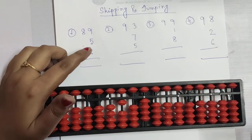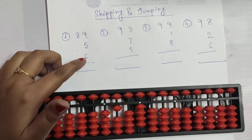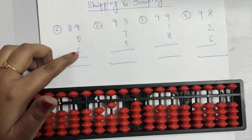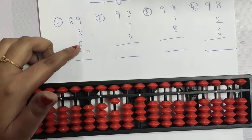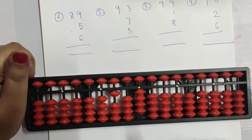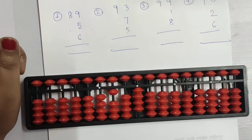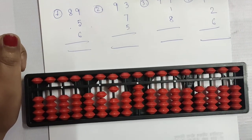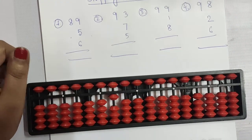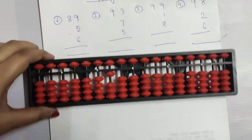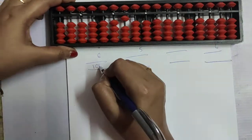Now 6's friend is 4 in big friend. So you have to less the friend. Add the boss, done. Less the friend — so 6's friend is 4, less 4. That's the value is 100.